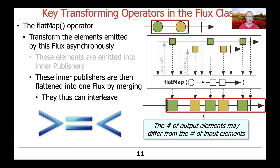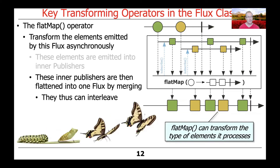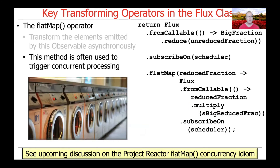This is very different from the map operator. With map, there's always a one-to-one correspondence between input and output elements. But with flatMap, there can be more, the same, or fewer output elements than input. Like map, flatMap can also transform the types and/or values of the elements it processes. This method is often used to trigger concurrent processing — not the only way to use it, but very commonly used this way.